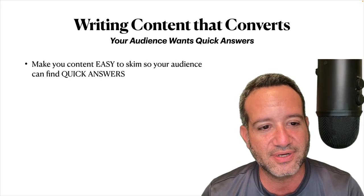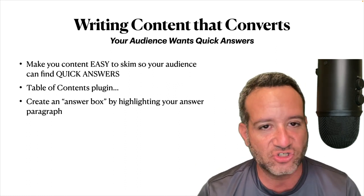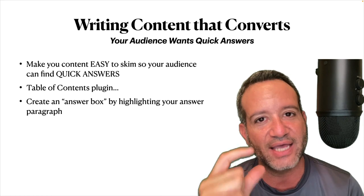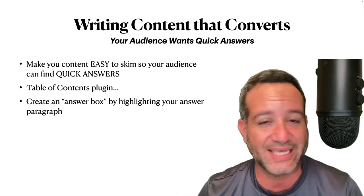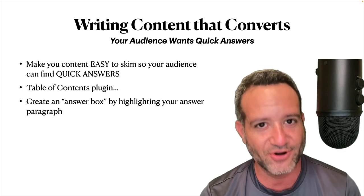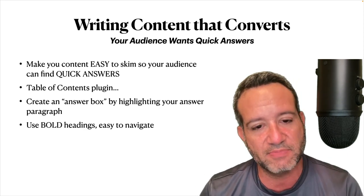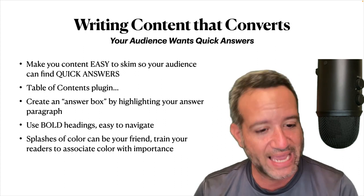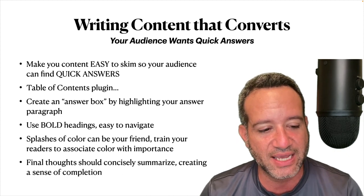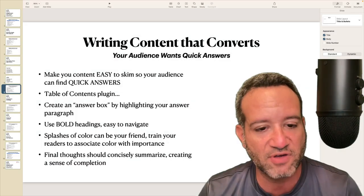Getting back to the class: create an answer box. When we're talking about creating quick answers, highlighting your answer paragraph lets your audience know right away: here's the answer I'm looking for. Remember, they're doing a simple quick scan of your content — they're only looking at 14%. Don't let that hurt your feelings. Make it easy for them to find the answer they're looking for. Use bold headings — bold headings make it easy to navigate. Splashes of color can be your friend. Train your readers to associate color with importance. And final thoughts should concisely summarize, creating a sense of completion.